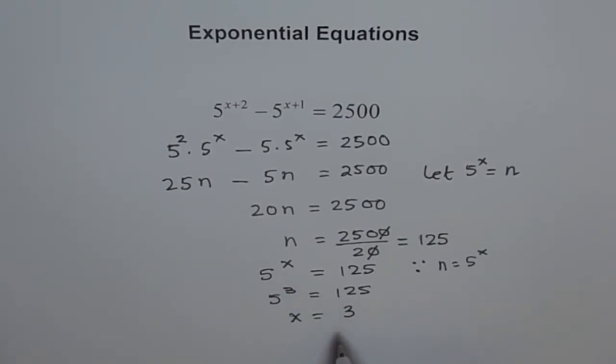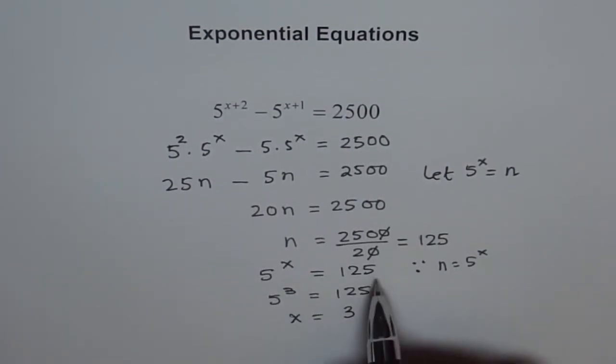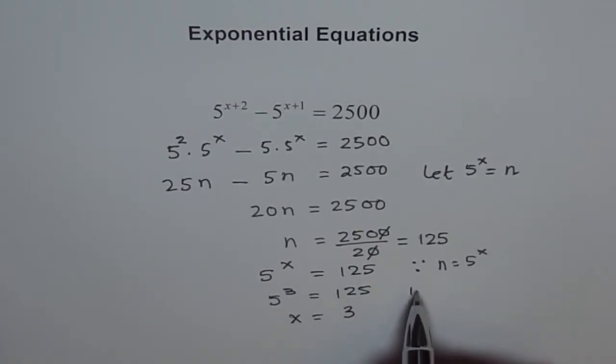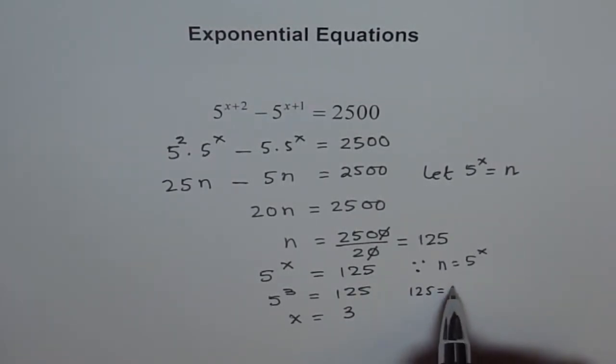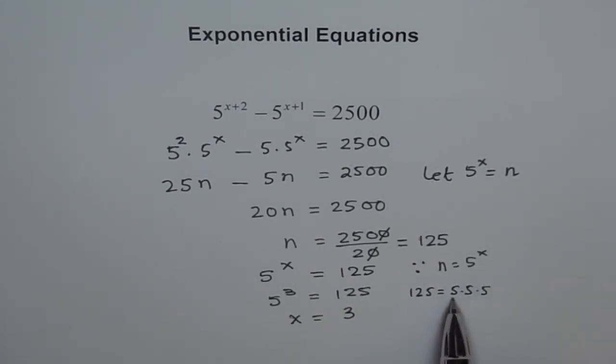So that way we get our answer, x equals to 3. You can see why it is so: because 125 equals to 5 times 5 times 5. We know 5 to the power of x is 125, and we also know that 5 to the power of 3 is 125. Therefore x equals to 3.